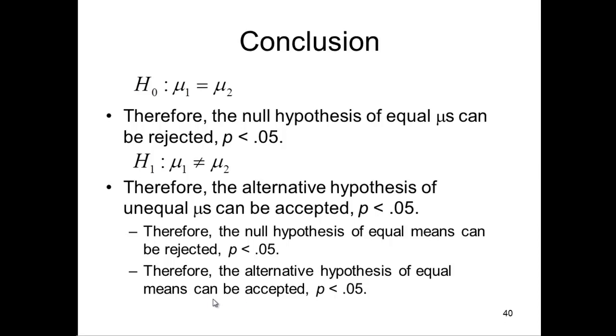A hypothesis of equal means can be accepted. Strictly speaking, we're doing the analysis to infer results to the population. We should be saying mu's, not means. But many people do it. Don't get confused. Just accept that people use the terminology slightly inaccurate in that context.